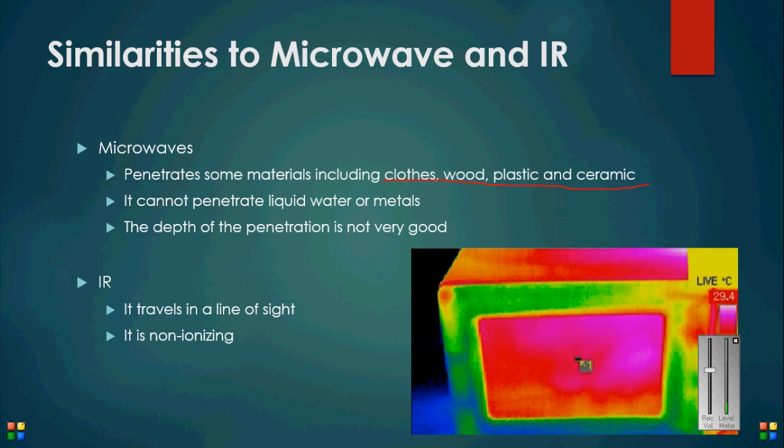This means that the radiation at these frequencies has limited penetration through fog or clouds. Additionally, compared to microwaves, the penetration of these waves is not as deep. The image here shows an infrared scan of a common household item.